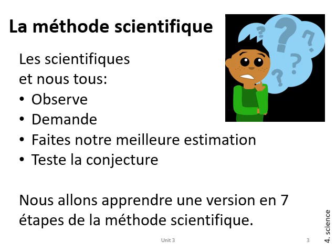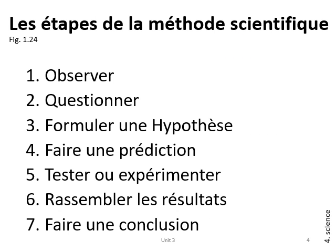We're going to learn a seven-step version of the scientific method. You might see this listed in other ways in other textbooks, but these are the seven steps we'll learn for this class. The seven steps of the scientific method — and remember, this is in your textbook if you want to read more — are: observe, question, formulate a hypothesis, and make a prediction.